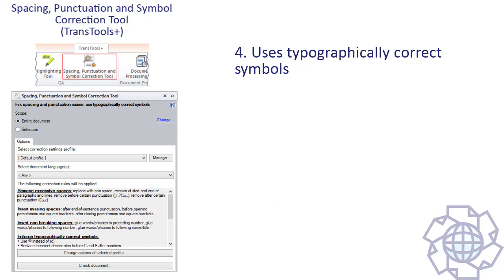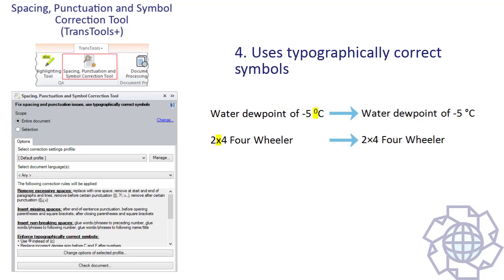And fourth, it uses typographically correct Unicode symbols that were designed specifically to have a certain meaning. Besides making the text easier to read, this will also prevent ambiguity. For example, it will use a degree sign instead of a superscripted 0 in the phrase '5 degrees Celsius', a multiplication sign instead of letter X in phrases like '2 by 4', or a single fraction sign instead of 3 symbols.